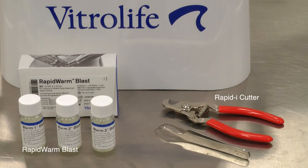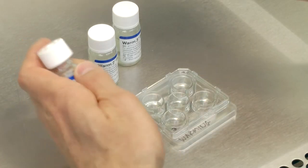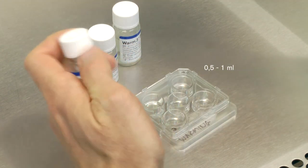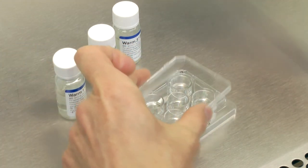the five-well culture dish, and the smart box containing liquid nitrogen. Place between 0.5 and 1 ml of each of the warming solutions in a separate well of a five-well culture dish. Place the lid back on and heat to 37 degrees Celsius.